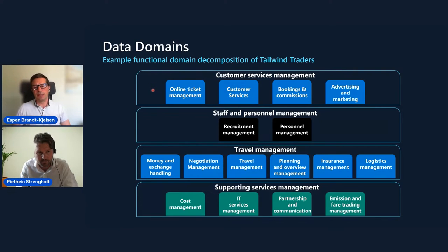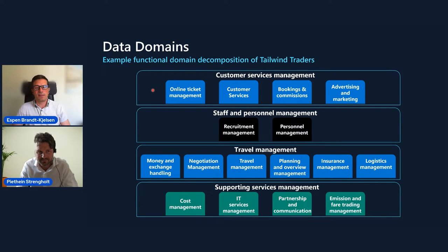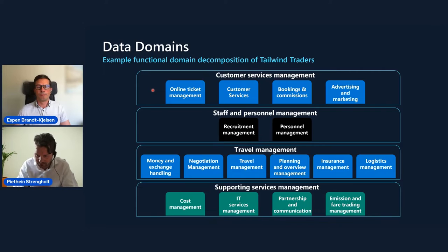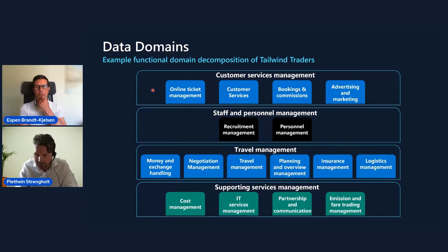You talk about the business capabilities, but data mesh refers to bounded contexts. Would you say that's the same as a business capability? Not exactly. Business capabilities and bounded contexts aren't exactly the same, but they are strongly related. Business capability is a bit more abstract — you could either implement them once or multiple times. When you start implementing, you will see the solution space and bounded contexts, which are for setting boundaries on such a solution space.